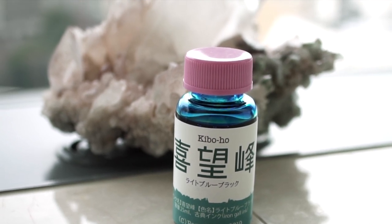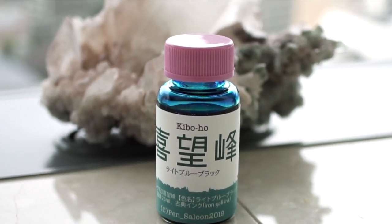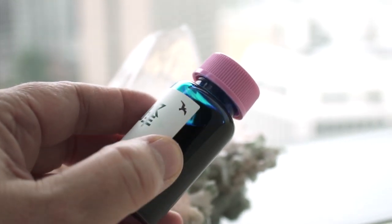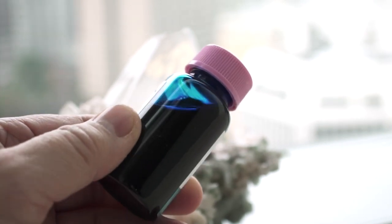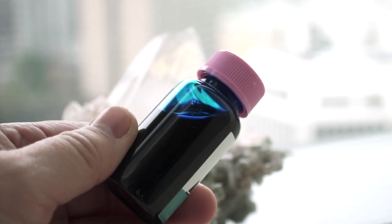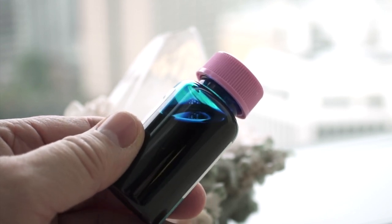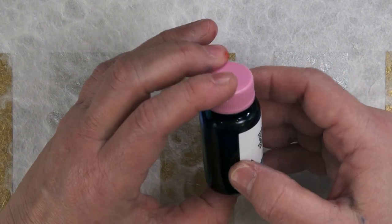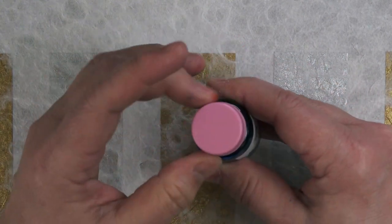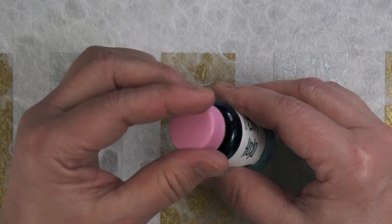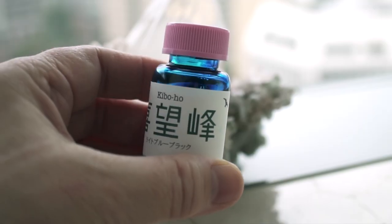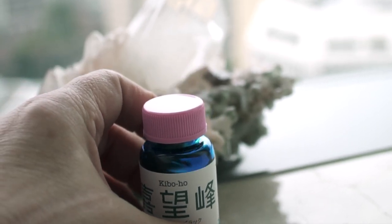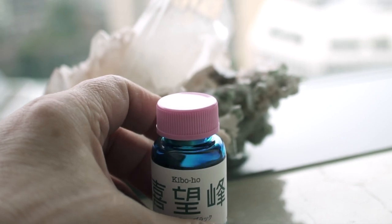This is an ink called Kiboho made by Pen Saloon 2019. It's a bright blue iron gall ink. It's an interesting ink in that it's a bright blue even though it's iron gall, and it takes a little while before it finally darkens down to a very dark blue. I like this bottle because it's kind of a light blue glass with this pink cap, and it reminds me of old-timey medicine bottles. And I find that fitting since it is an iron gall ink. It would be hard to find another bottle that looks like this one.